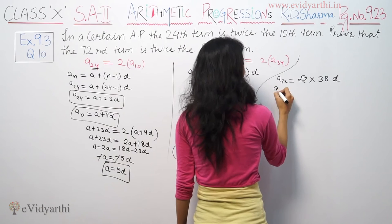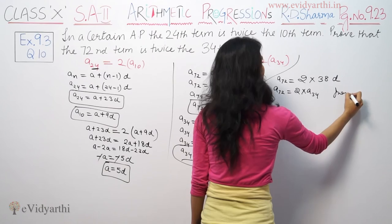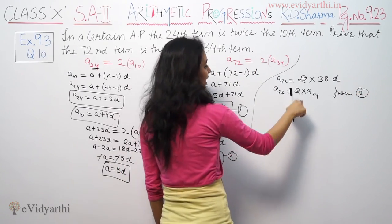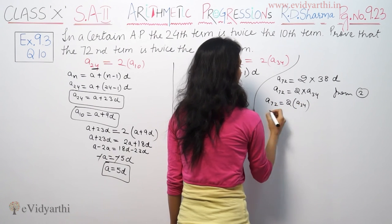So A72 is equal to twice of A34. Here we have proved that A72 is equal to twice of A34.